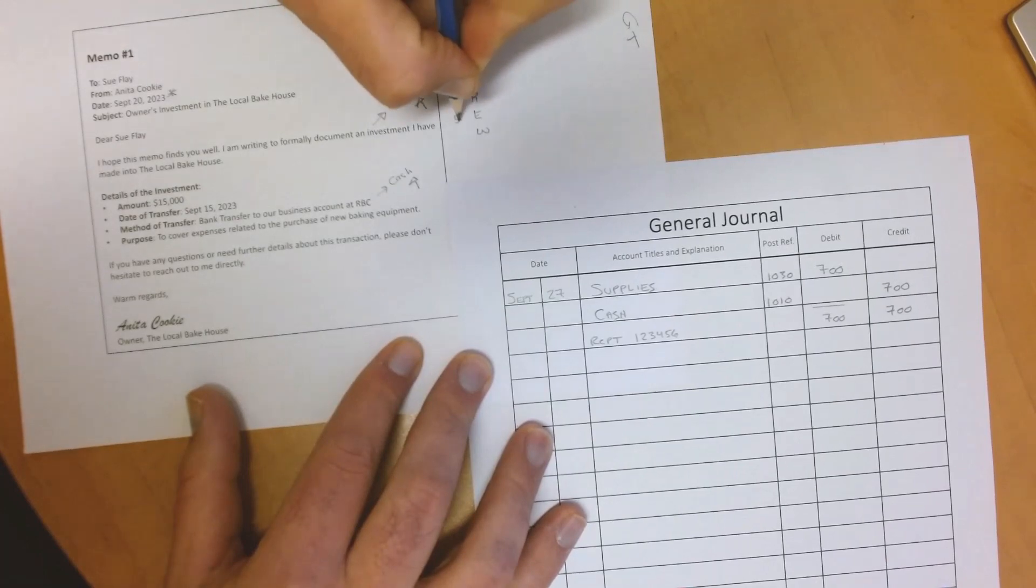We know 3010 is a capital account, and it has increased as well, so it will need to be credited.